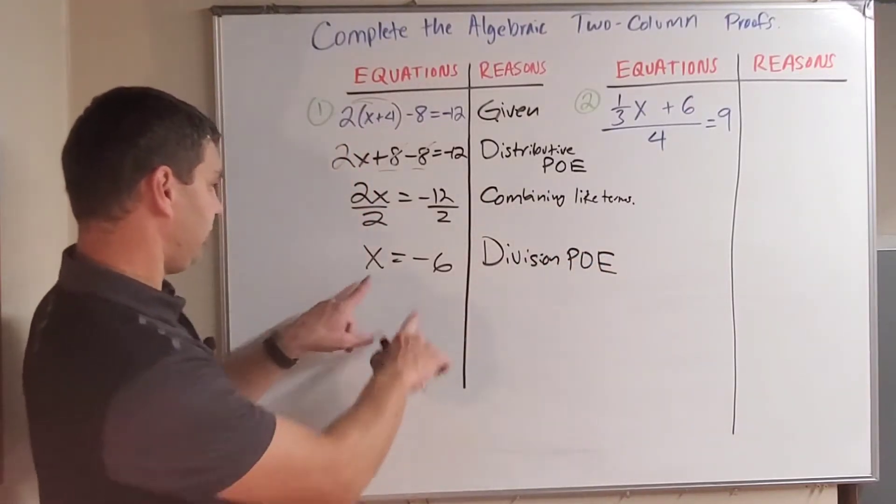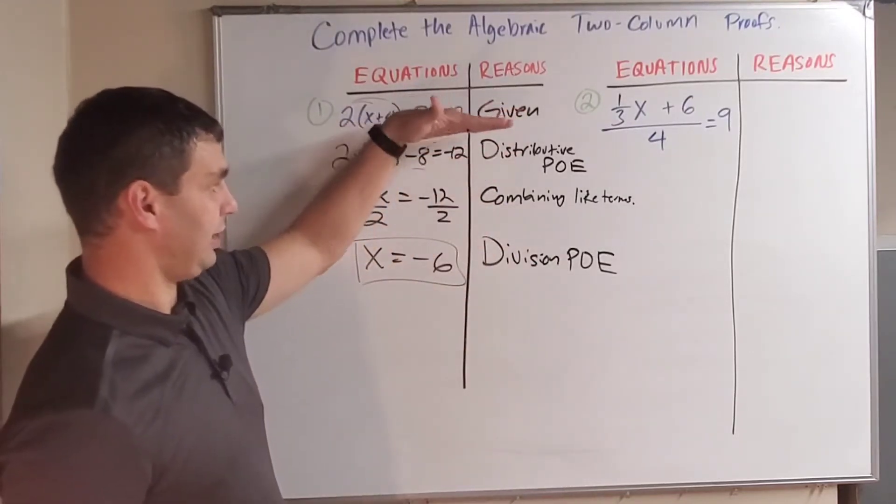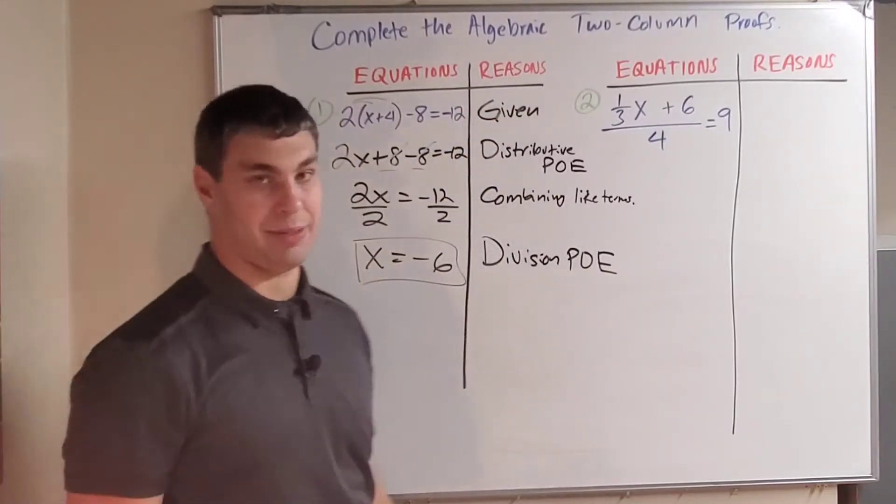And we finished this one. X is isolated, so we know we're done. You can circle it if you want to, but we did it using these steps: given, distributive property, combining like terms, and the division property of equality.